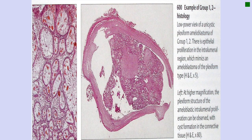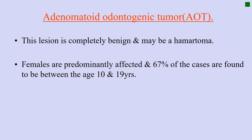Next is adenomatoid odontogenic tumor (AOT). This lesion is completely benign and is often considered a hamartoma. Two important terms to remember: hamartomas are benign growths native to the site of origin, while choristomas are normal-looking tissue but not native to the site — for example, normal brain tissue found in the jaw due to a fault in embryological development.